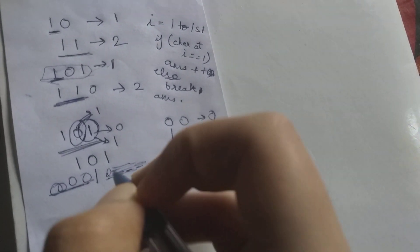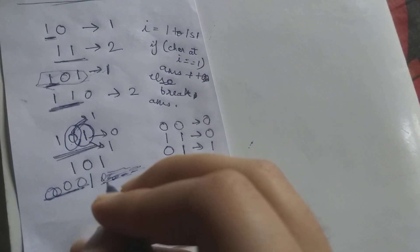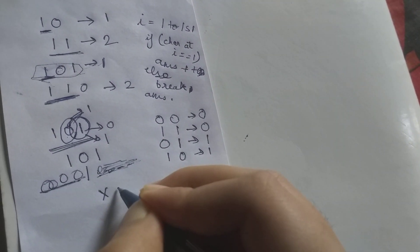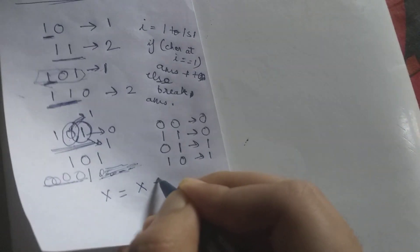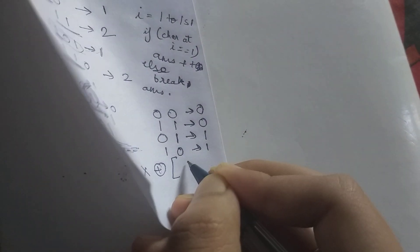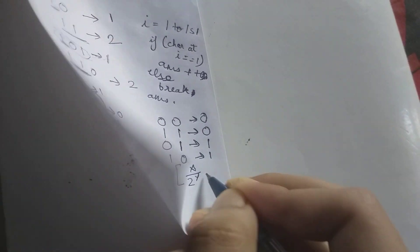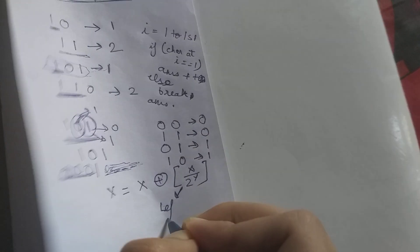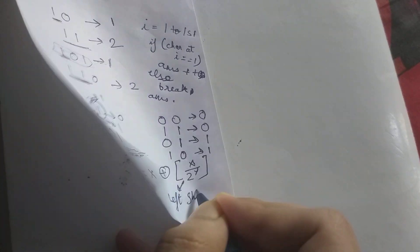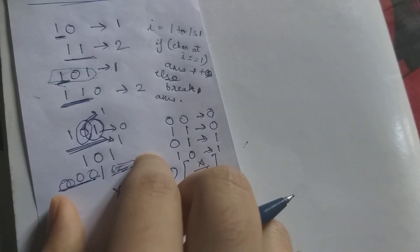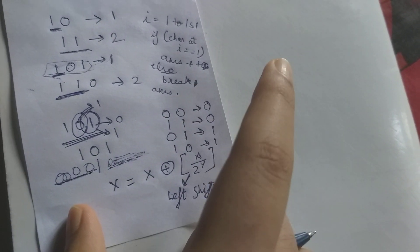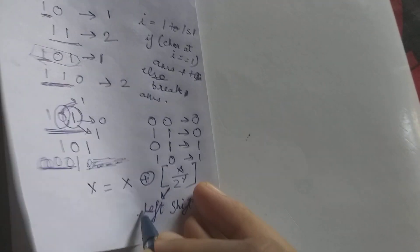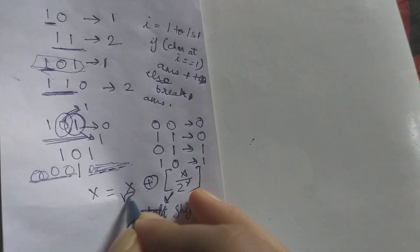So the first thing you have to know that the thing that the question demands was make X equals to X XOR X by 2 to the power Y. Now this is basically what we call the right shift.